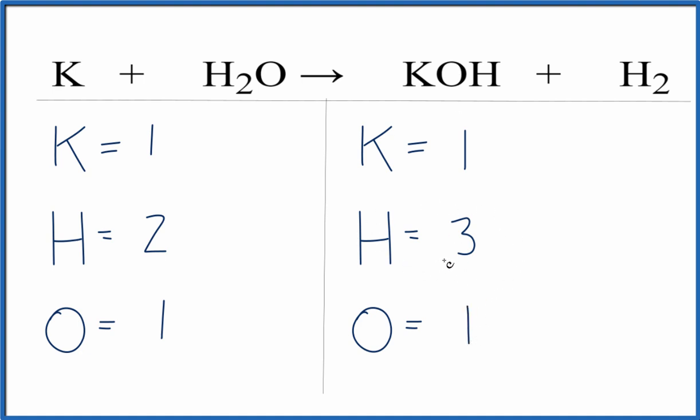Let's get this to be an even number, and that'll make the balancing a lot easier. So the only way really to do that is to put a two in front of the KOH. So now we have hydrogens. Let's update that. One times the two plus these two here. So we have four hydrogen atoms.